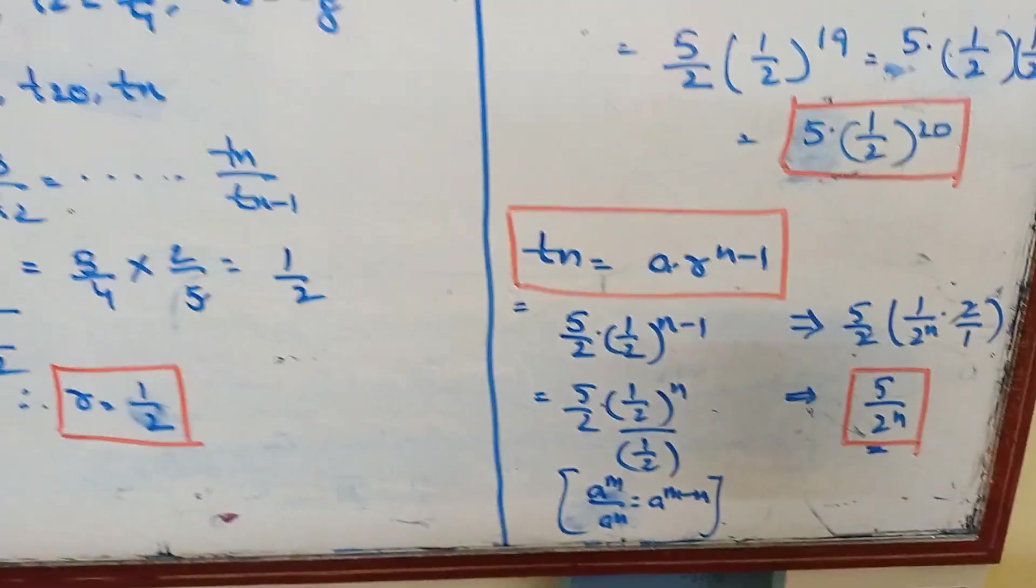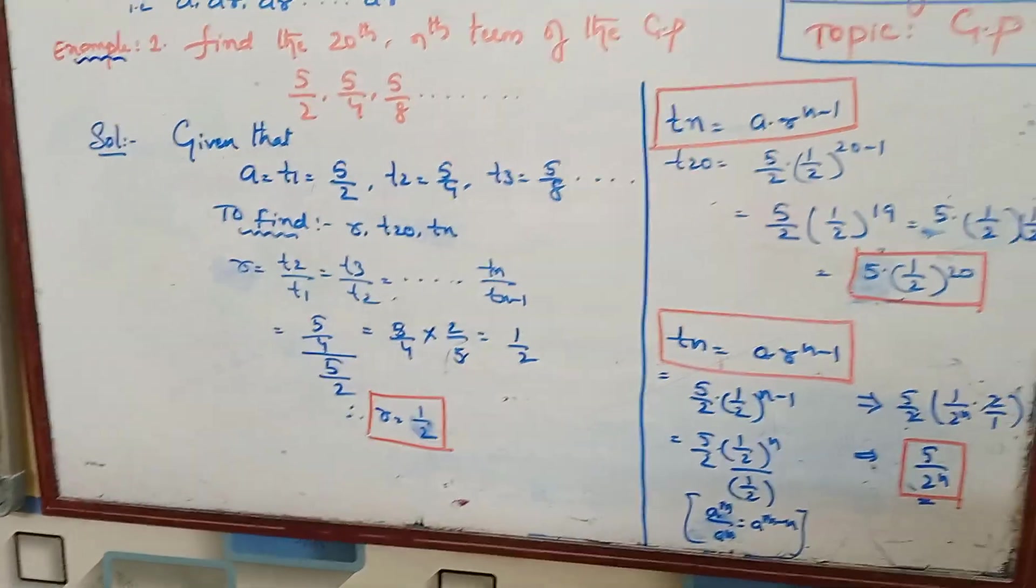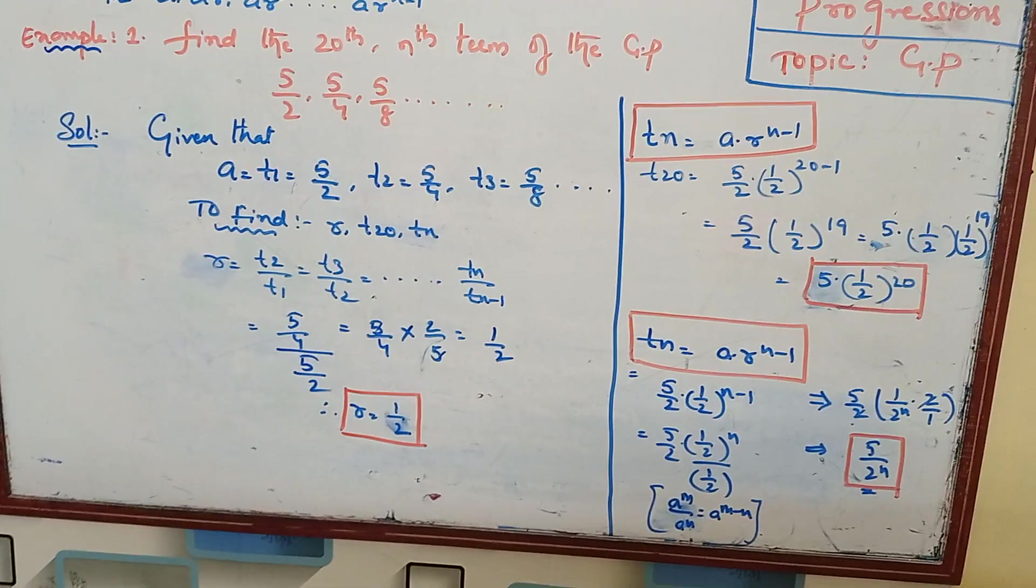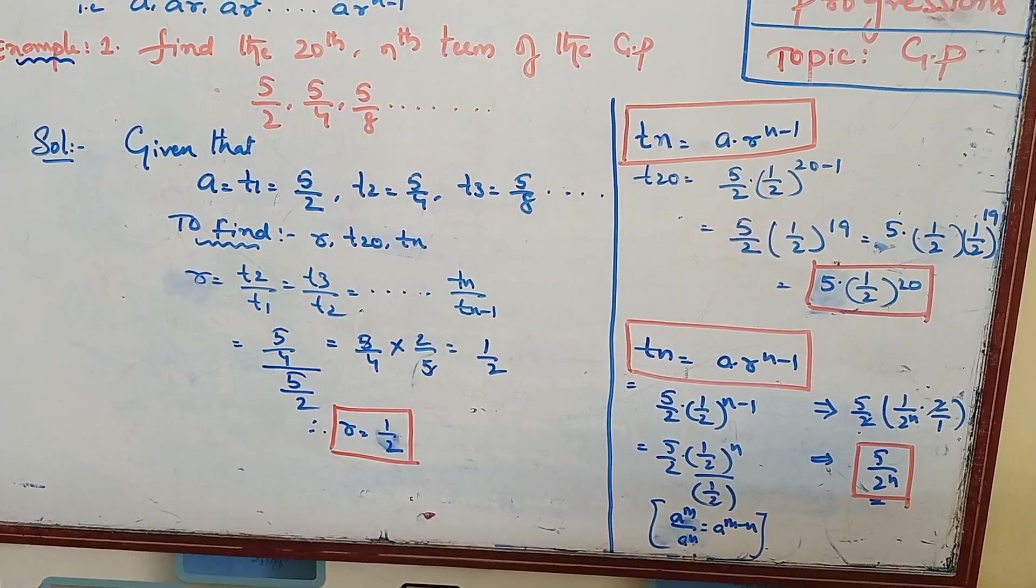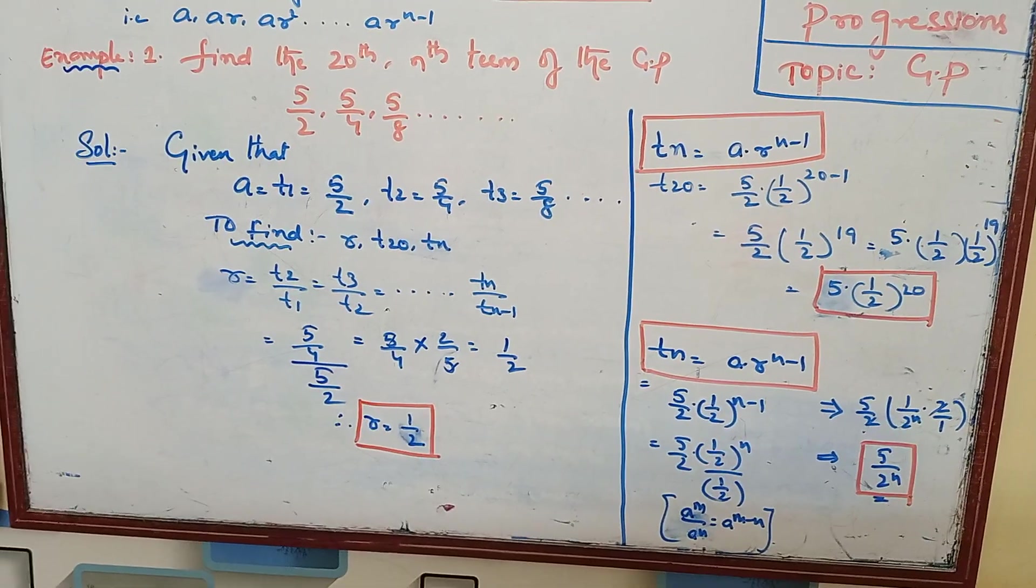So with this, what do you understand? If we know the sequence of terms, first term and second term, and with the common ratio, then we can find any term in the given GP series.